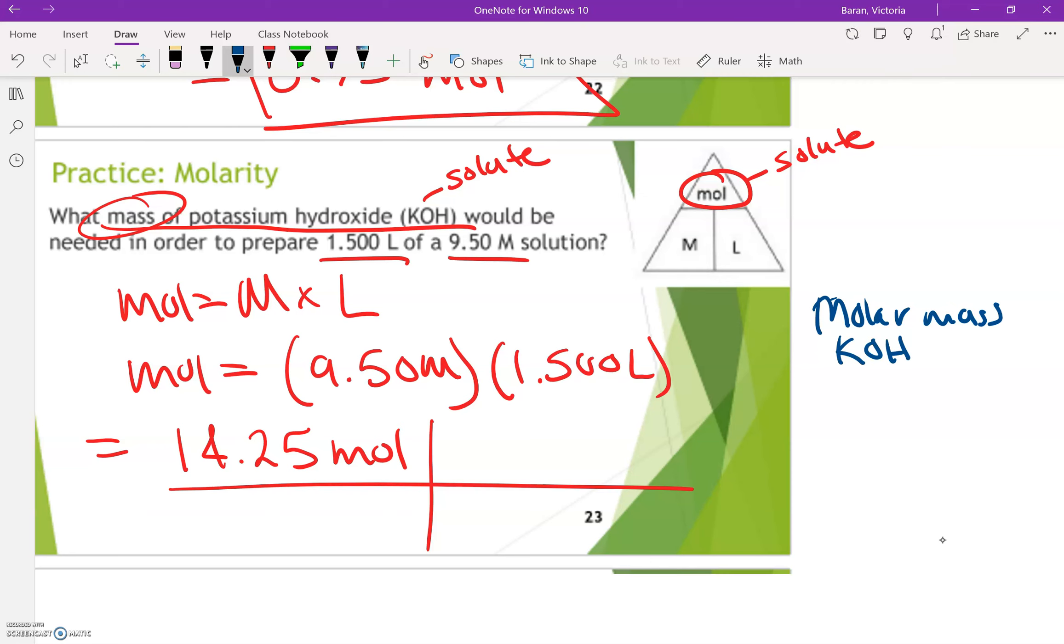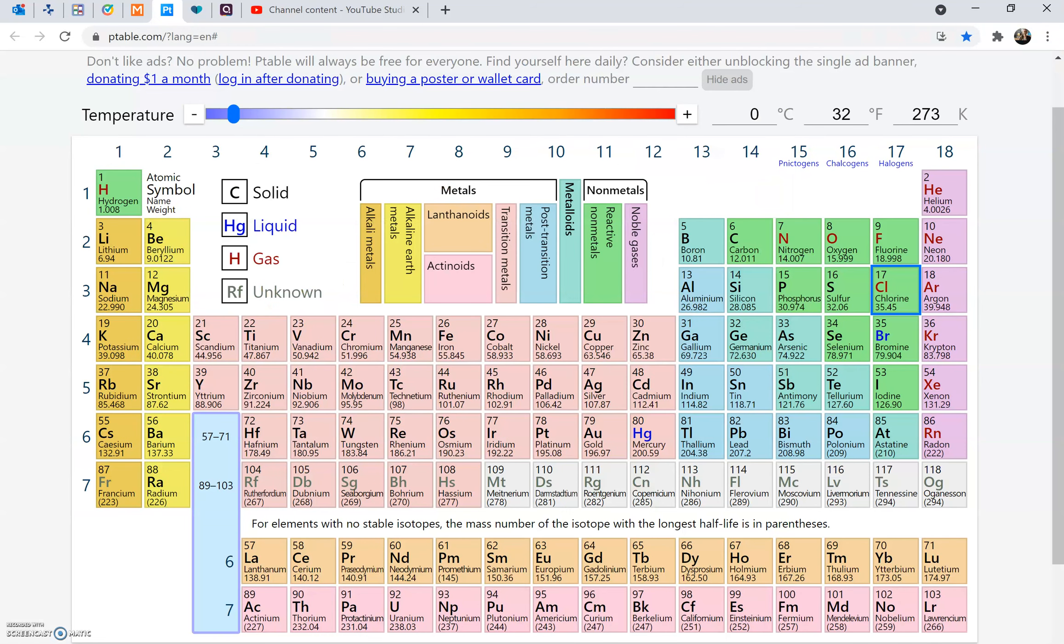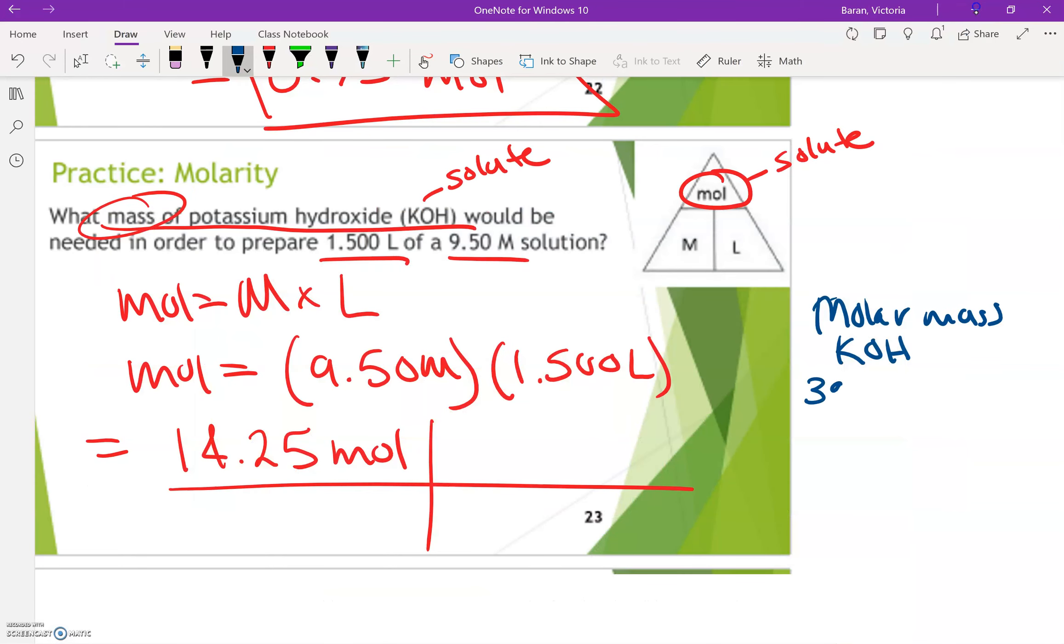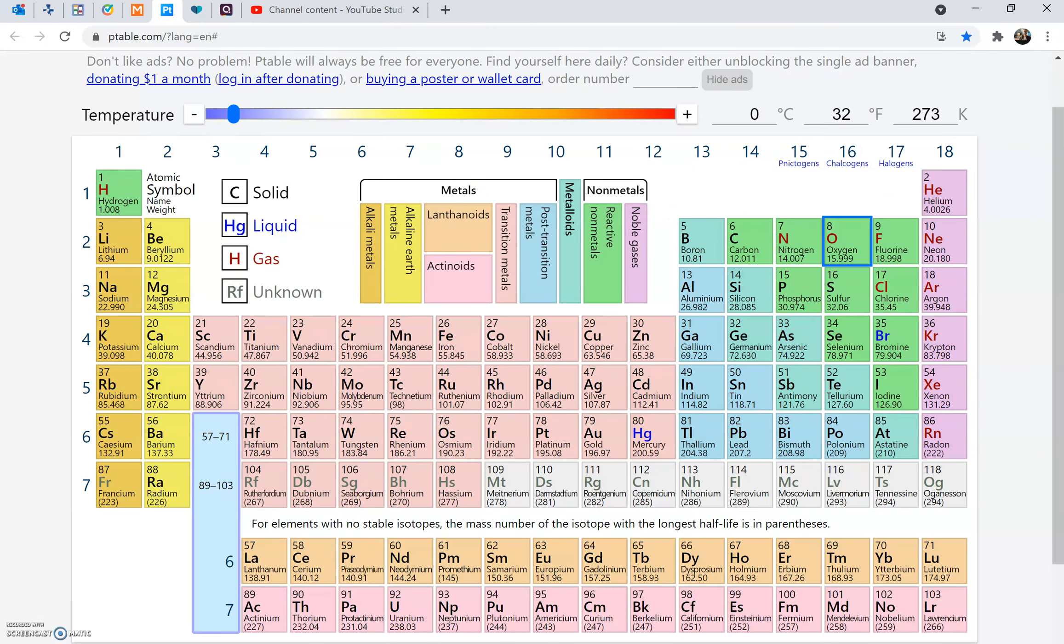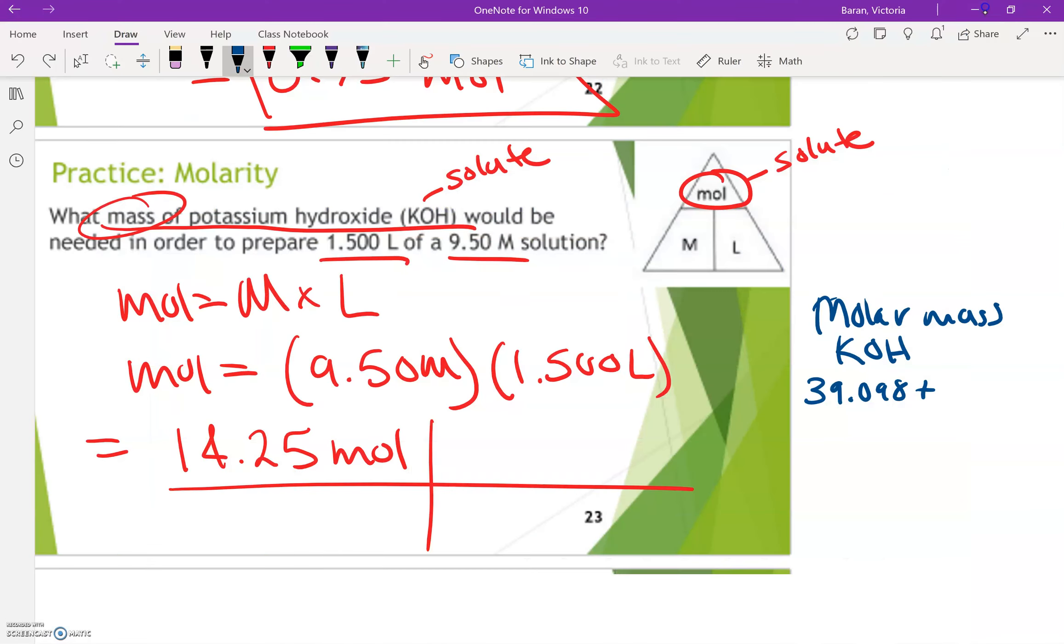So this one's not too bad. We have K, which is potassium, which again, we already used earlier, 39.098 plus we have one oxygen. Remember oxygen is 15.999. I'm okay if you round that up to 16 plus we have one hydrogen.